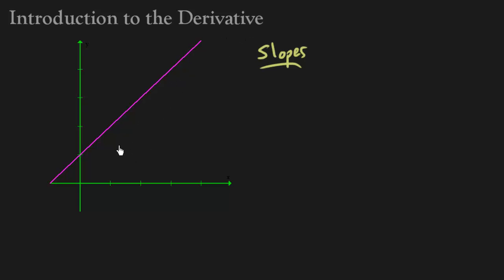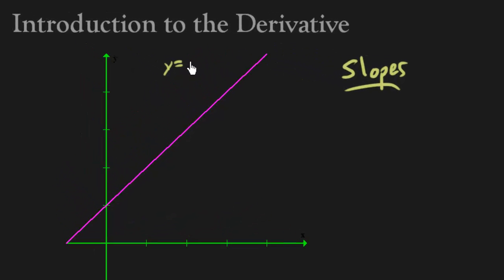I have a graph here — it's just a nice diagonal line. The slope at any point is actually the same anywhere on this graph. From algebra, you know it's going to have the form mx + b, and that m is the slope. I want to find the slope using the slope formula from algebra.